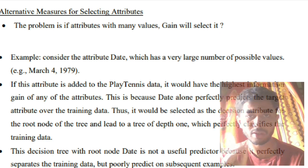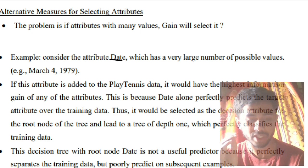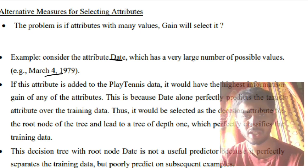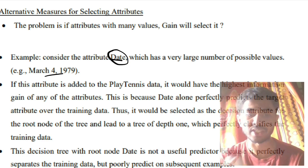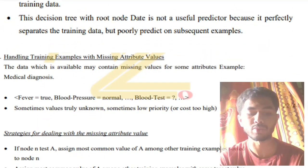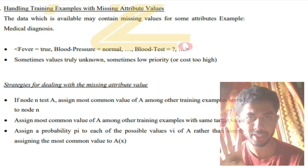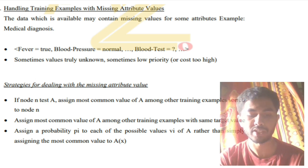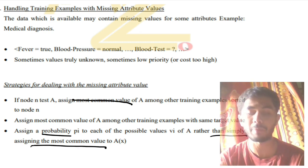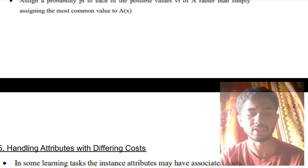Next: 'A' is alternate measures for selecting attributes. One issue is that an attribute like 'date' can have many very specific values (March 4 1979, March 5 1979, etc.), which classifies very accurately but creates a very large dataset. The first 'H' is handling missing attributes — do two things: either assign the most common value or assign the most probable value. Those are the two ways to handle missing attributes.